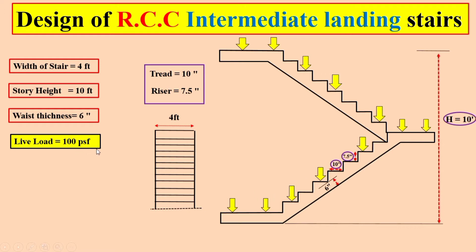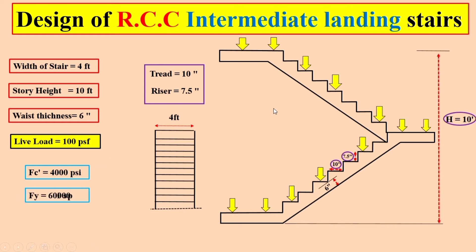The total live load for this stair design is 100 pounds per square foot. For the basic components: concrete has a total compressive strength of 4,000 PSI, and the steel yield strength is 60,000 PSI. This all data is sufficient for the designing of the RCC intermediate landing stair.